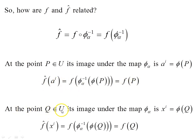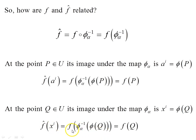At the point q belonging to U_alpha, its image under the map phi_alpha is xi equals phi_alpha of q. f-hat of xi is f of phi_alpha inverse of phi_alpha of q, and the two maps being inverses of each other cancel, giving us f of q.